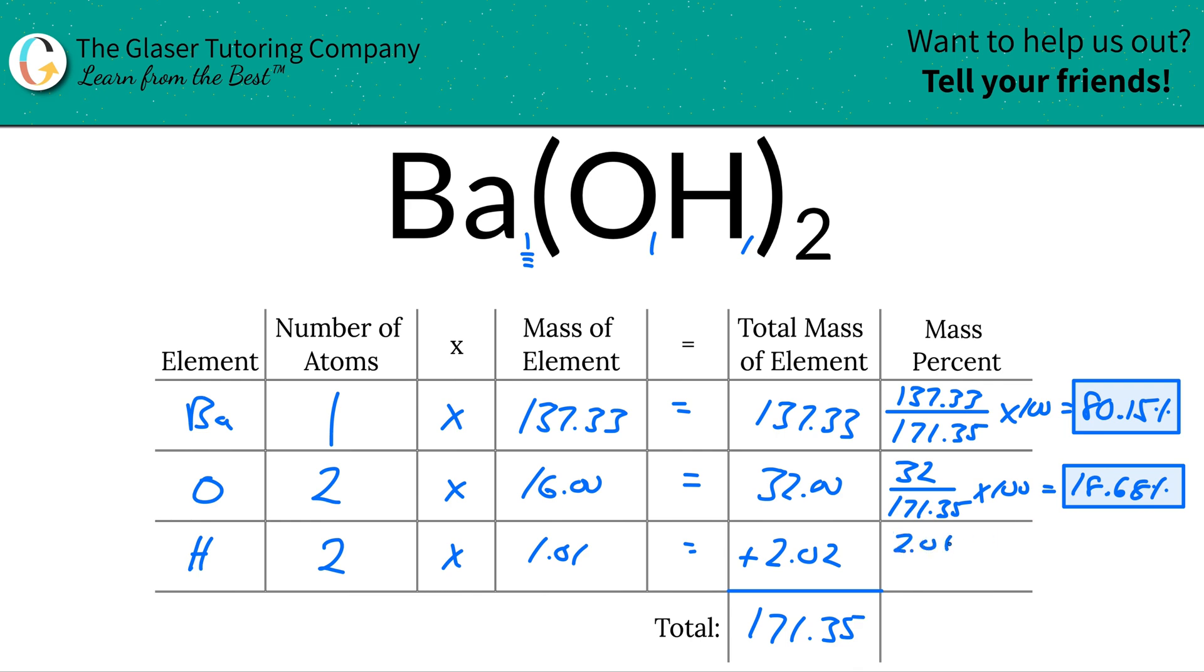And then last but not least, same thing for hydrogen. 2.02 divided by 171.35 times that by 100, and you're going to find a value of about 1.18 percent.